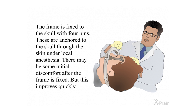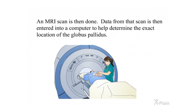The frame is fixed to the skull with four pins, which are anchored through the skin under local anesthesia. There may be some initial discomfort after the frame is fixed, but this improves quickly. An MRI scan is then done, and data from that scan is entered into a computer to help determine the exact location of the globus pallidus.